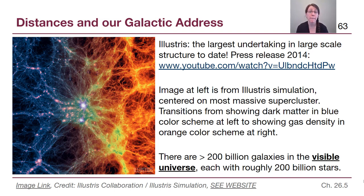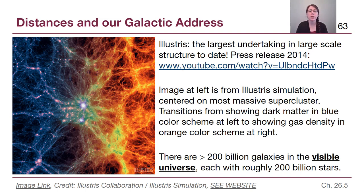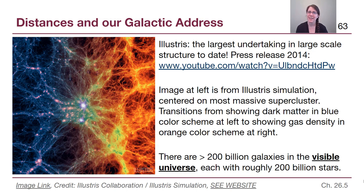There are over 200 billion galaxies in the observable universe, and each has roughly 200 billion stars. We live in our little tiny solar system, but we are part of so many amazing structures. We'll be talking about the formation and fate of the universe in chapter 29, and I want to make sure we go into it with an understanding of these different size scales. See you in chapter 29 — thanks for watching.